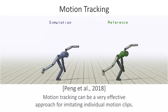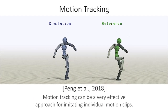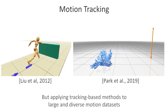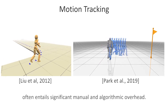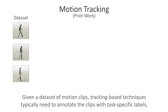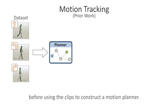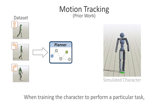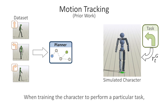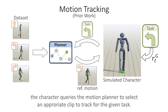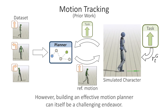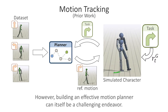Motion tracking can be a very effective approach for imitating individual motion clips, but applying tracking-based methods to large and diverse motion data sets often entails significant manual and algorithmic overhead. Given a data set of motion clips, tracking-based techniques typically need to annotate the clips with task-specific labels before using the clips to construct a motion planner. When training the character to perform a particular task, the character queries the motion planner to select an appropriate clip to track. However, building an effective motion planner can itself be a challenging endeavor.